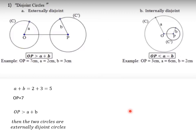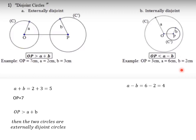The second case is internally disjoint circles. The rule says: if OP is less than A minus B, then they are internally disjoint circles. Here, OP is the distance between the two centers, A is the radius of the first circle, and B is the radius of the second circle.